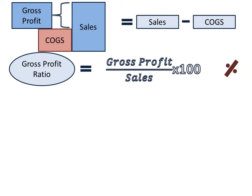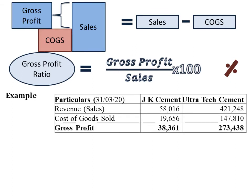Let us now see the application of this formula. Here I have taken an abstract of income statements of J.K. Cement Limited and Ultra Tech Cement Limited for the year ended 31st March 2020. Rupees are in millions. We have revenue, cost of goods sold, and gross profit.